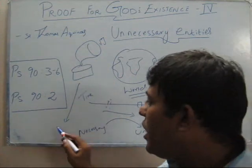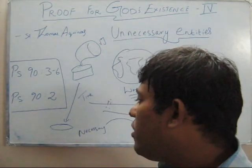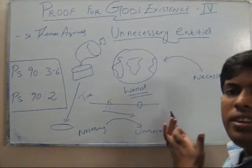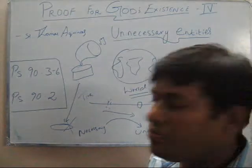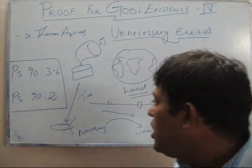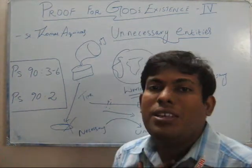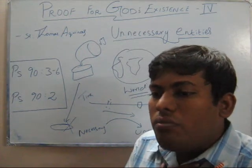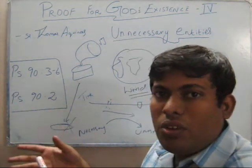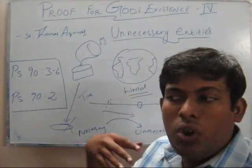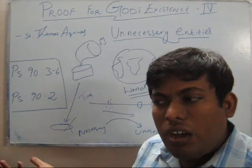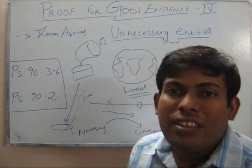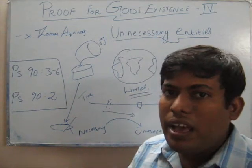As we progressed, it became the gramophone player, then the CD player. When you move the time scale further, this CD player is also not going to exist — it will be substituted with something else. Similarly for human beings: I am necessary in this world from 1980 to some time, but by 2100 I am not necessary — I die and perish.